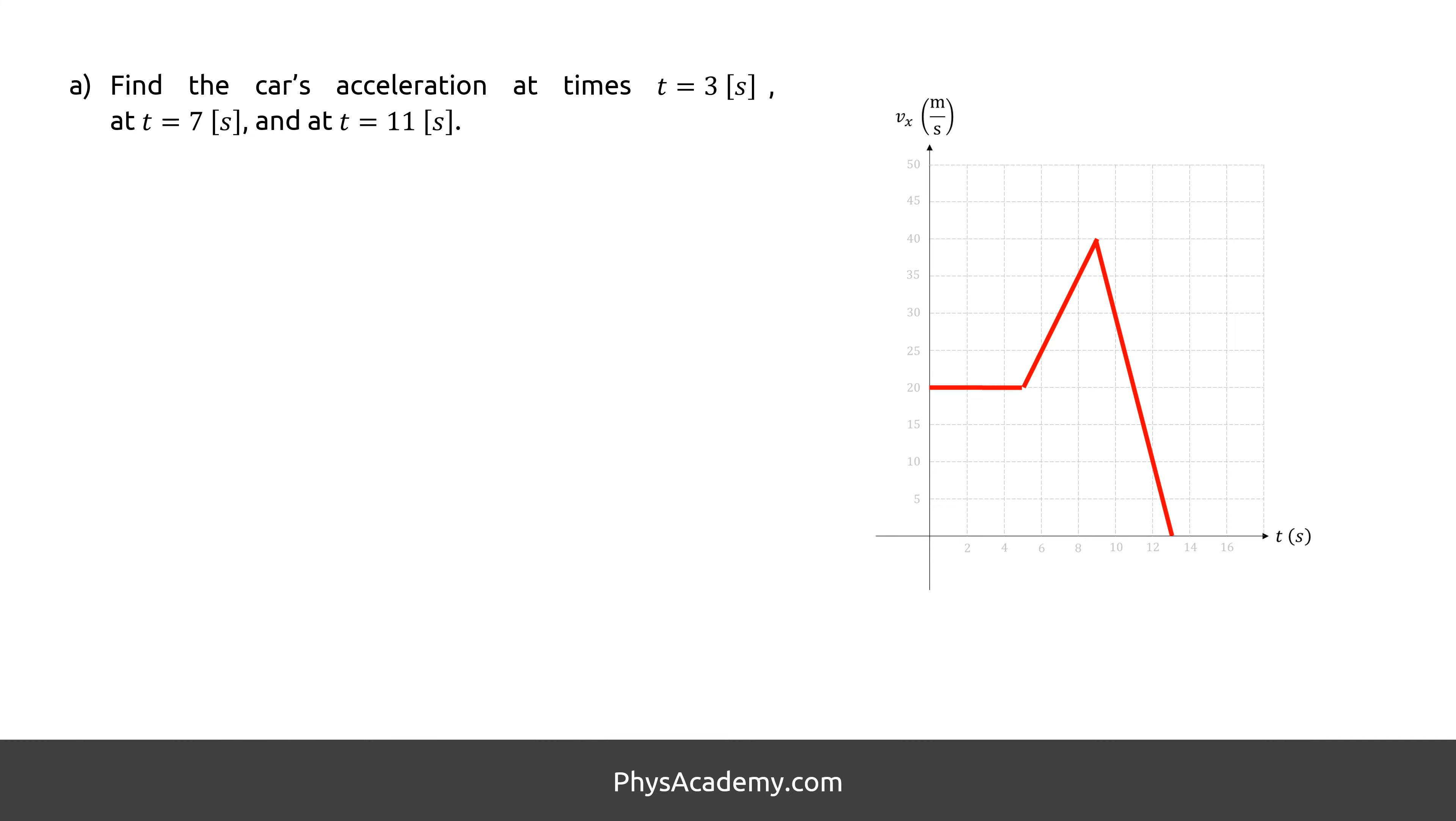Alright, in Part A, we are asked to find the acceleration of the motion at multiple moments. In general, acceleration of a motion is the rate of change in velocity. In other words, the slope of a velocity versus time plot. At time equals 3 seconds, the velocity versus time plot is flat, therefore, the slope is 0. It means the acceleration at 3 seconds is 0, too.